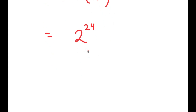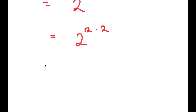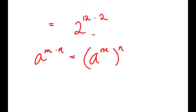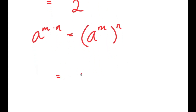From here, I'm going to write this as 2 to the power of 12 times 2. The reason I did this is because I can now use the property a to the power of m times n equals a to the power of m to the power of n. So 2 to the power of 12 times 2 is equal to 2 to the power of 12 to the power of 2.